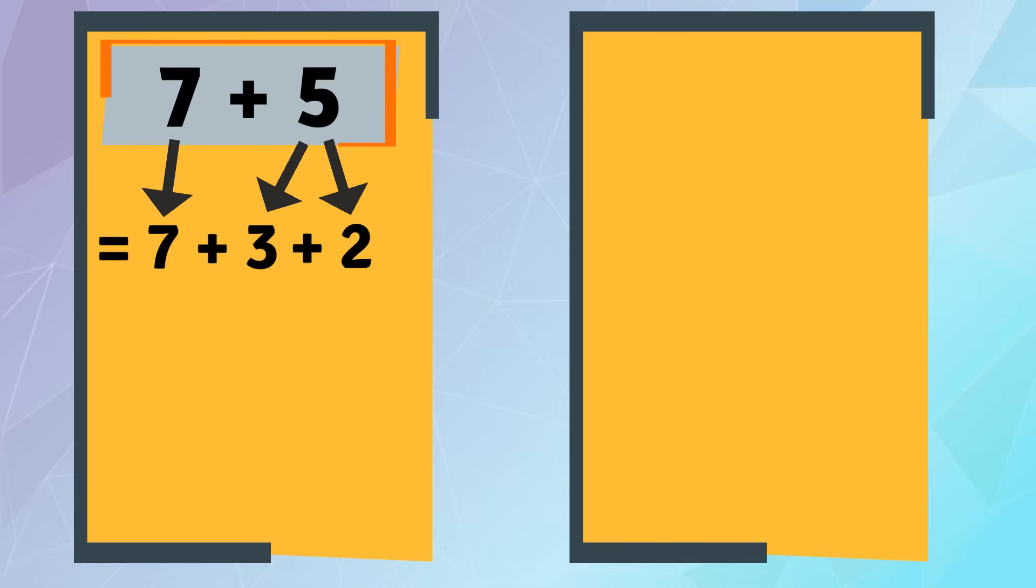Let's solve these equations. 7 plus 5. To make 10, we can take 3 from 5 and add it to 7. If we do that, we can rewrite the equation as 7 plus 3 plus 2. 7 plus 3 equals 10.